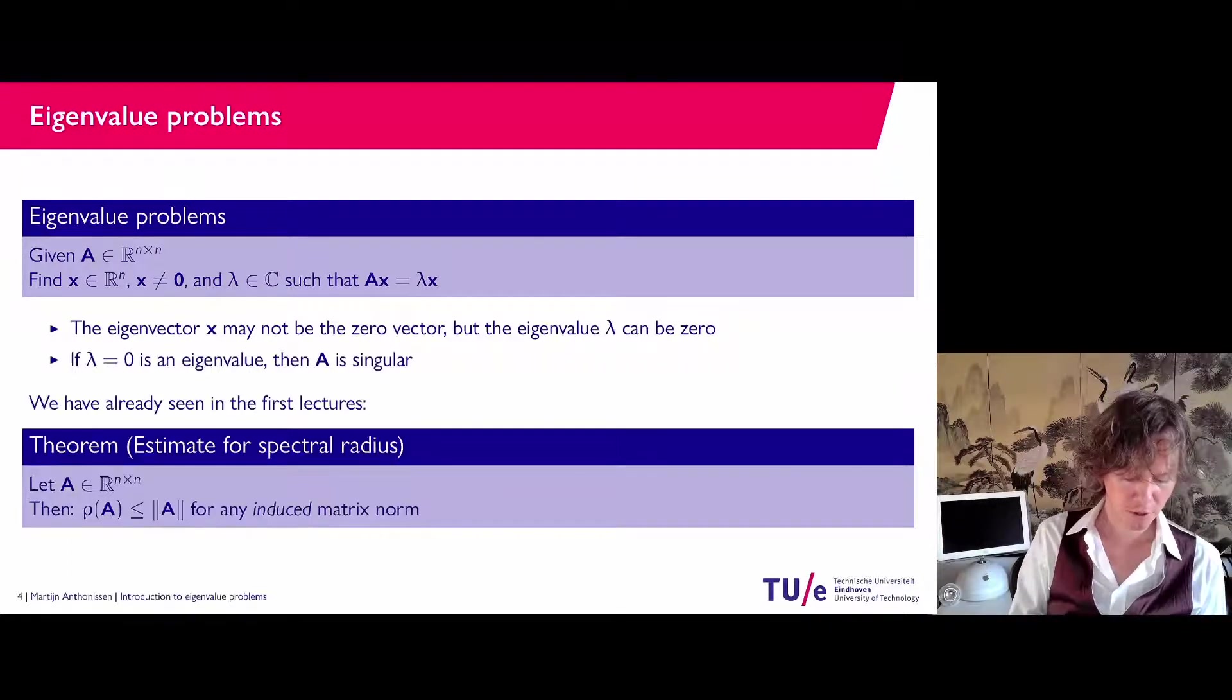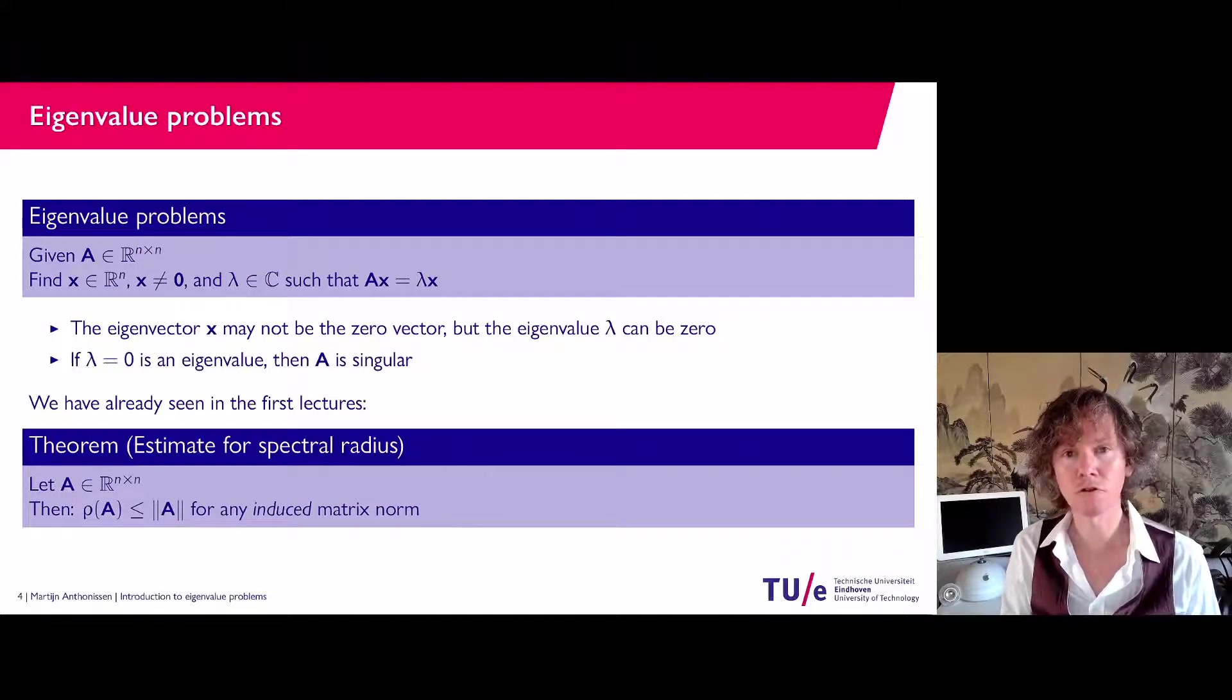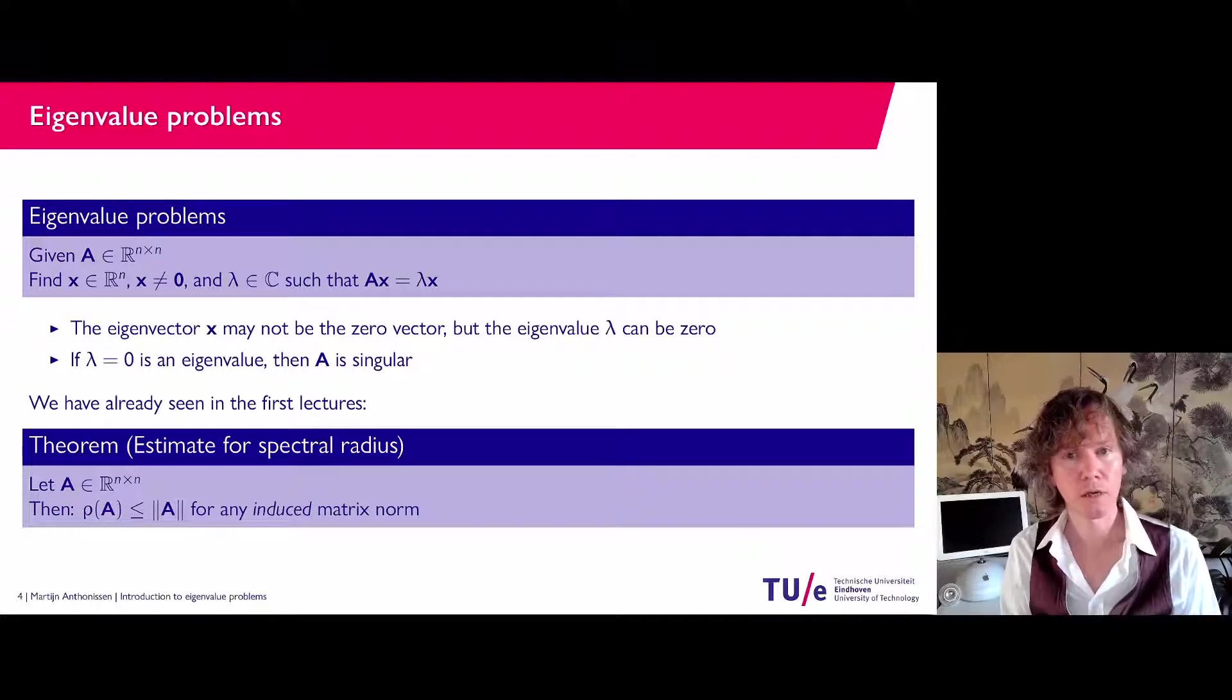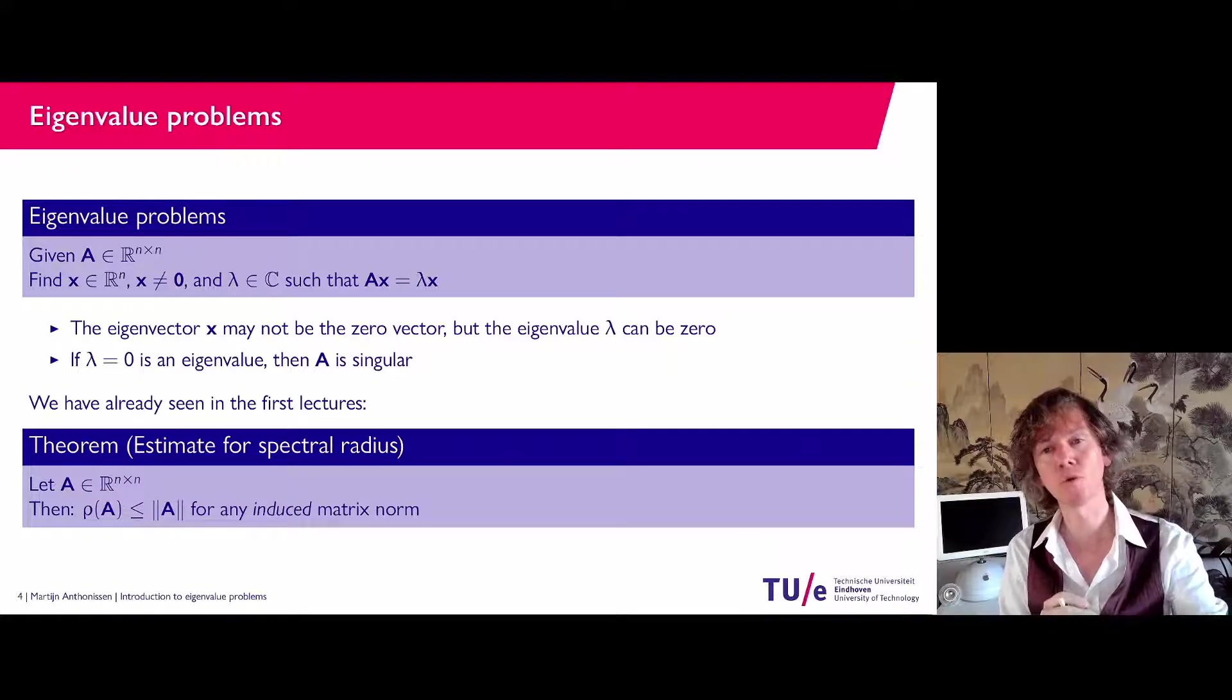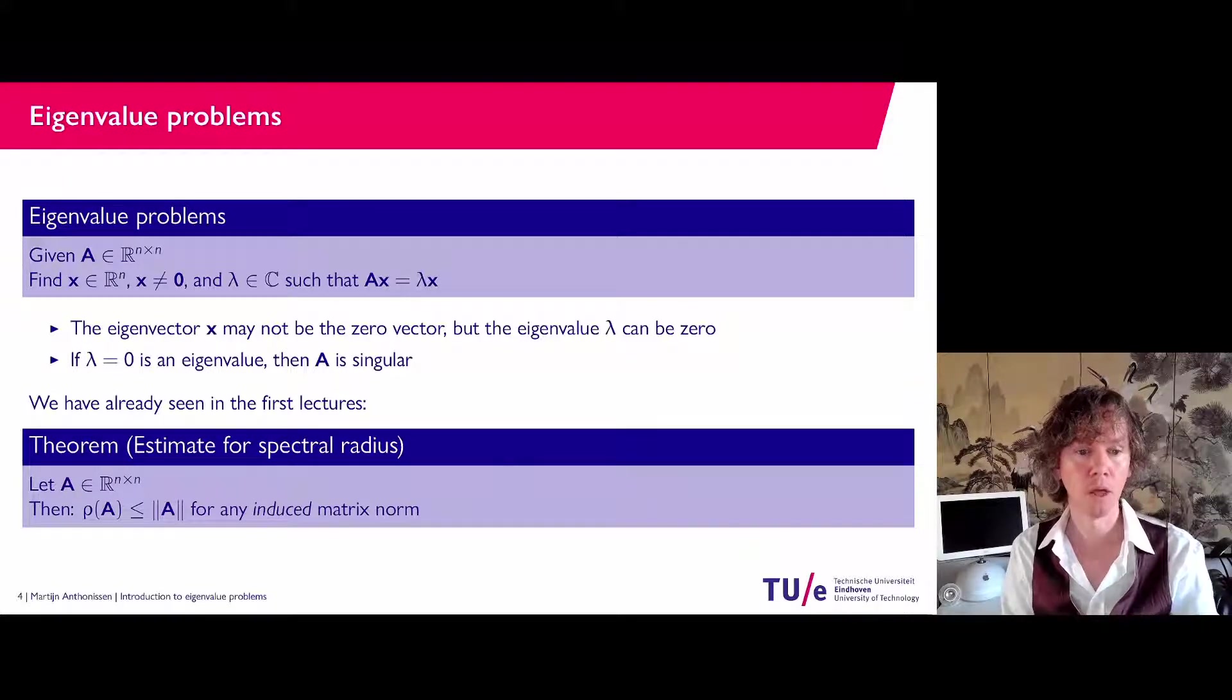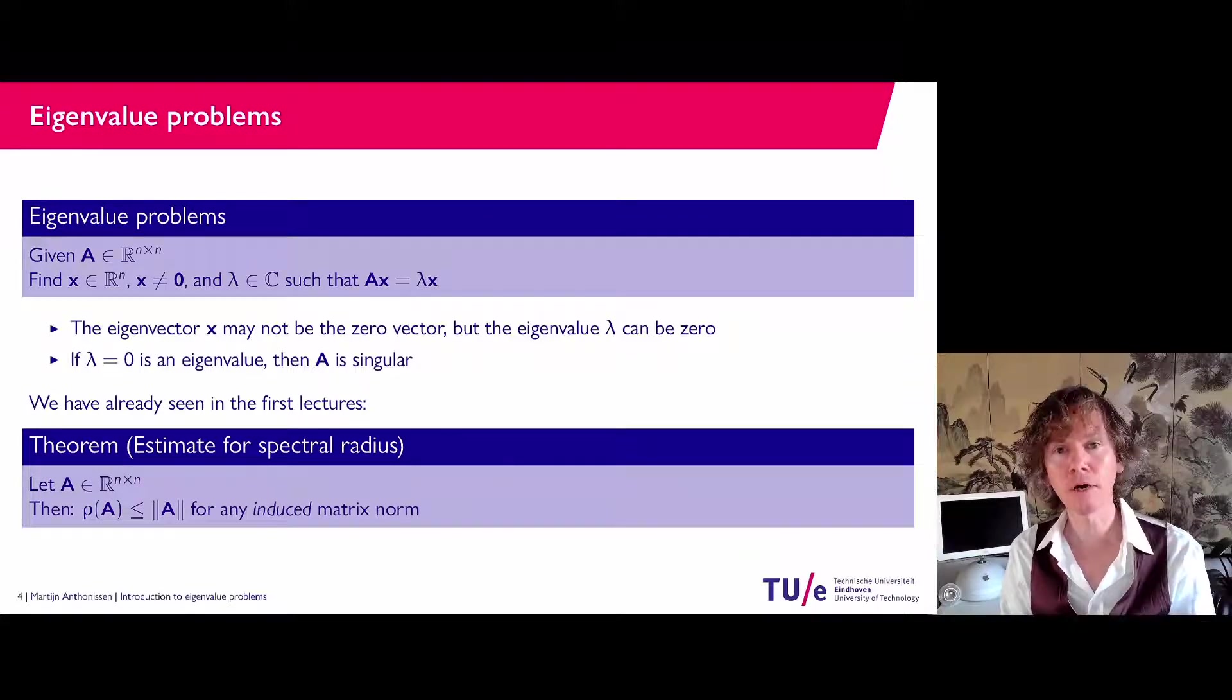If λ is an eigenvalue, then A is singular. We have already seen in a previous video that if you take an induced matrix norm, so a vector norm induces a matrix norm. In particular, we have the one matrix norm, two matrix norm, and we have the infinity matrix norm.